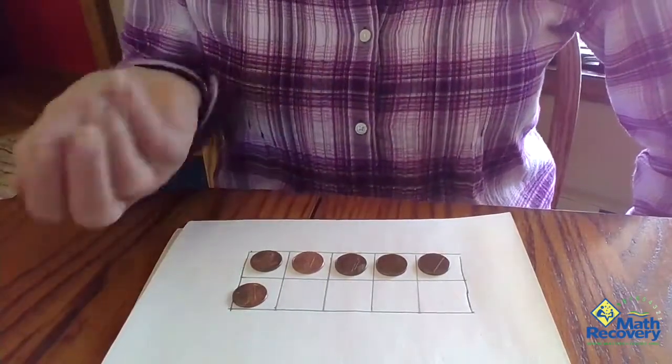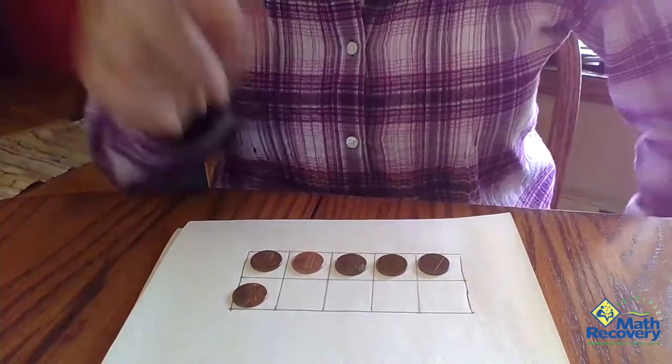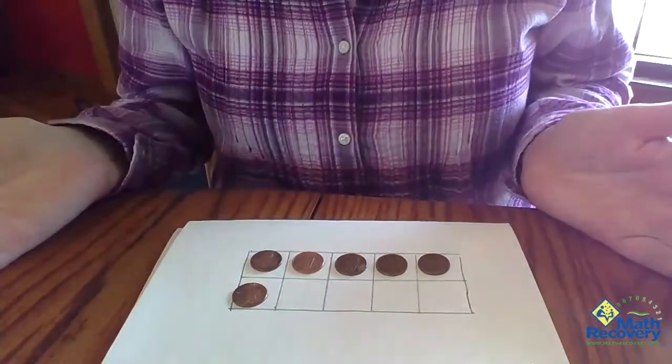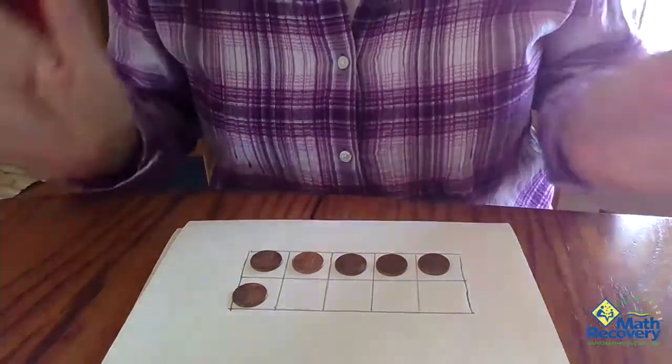So on the next roll, I rolled a six. I do not have six boxes left so I lost my turn.